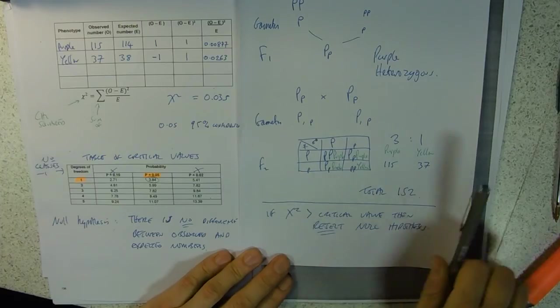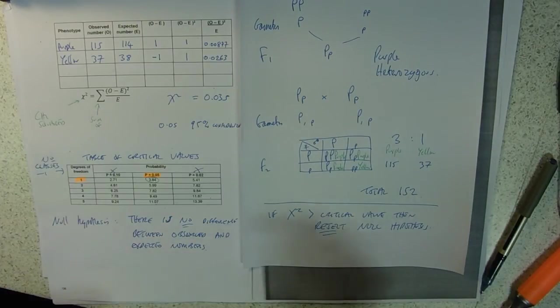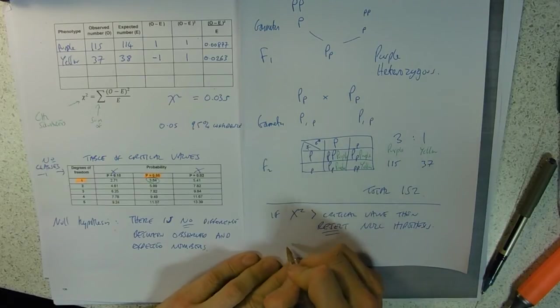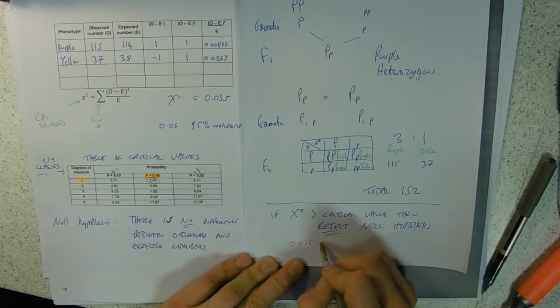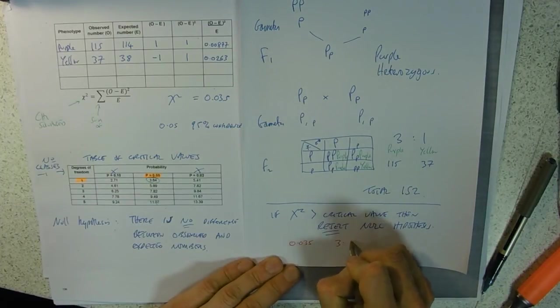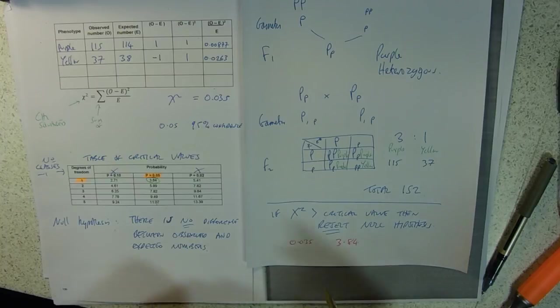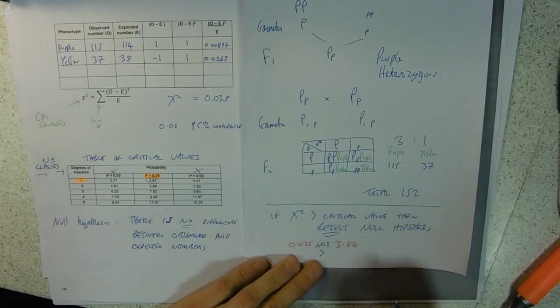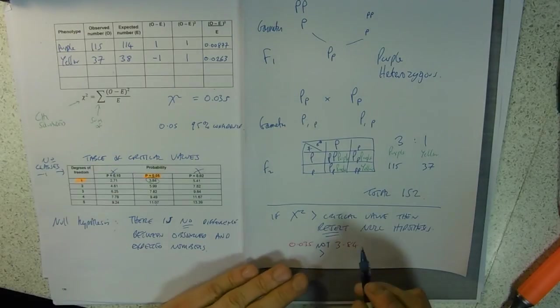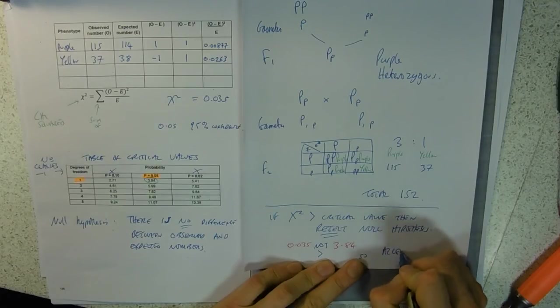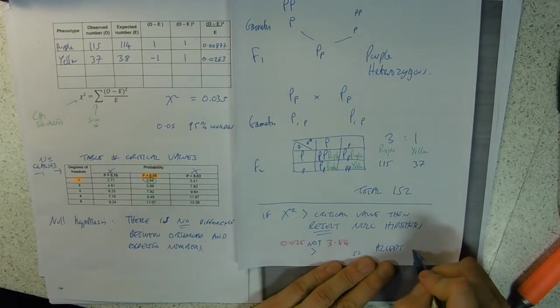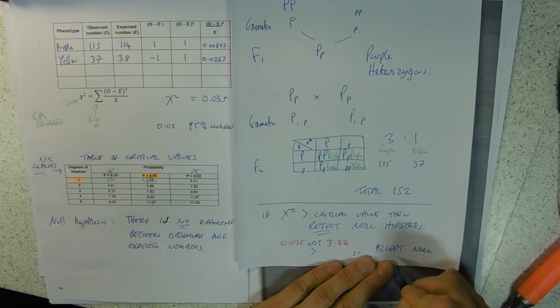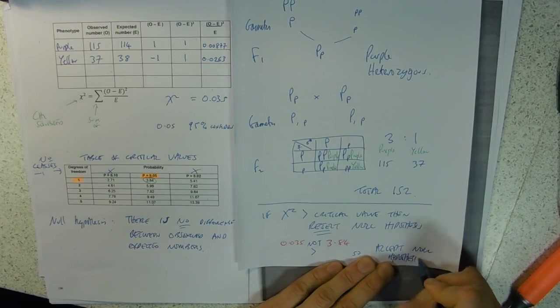So if chi-squared, which in this case is 0.035, is greater than our critical value, which is 3.84 - we can say it's not, it's not greater, it's smaller. So we have to accept our null hypothesis.